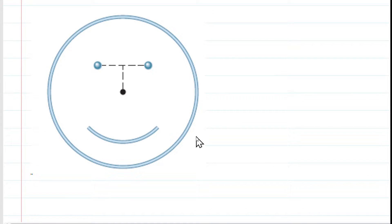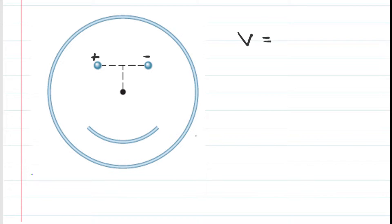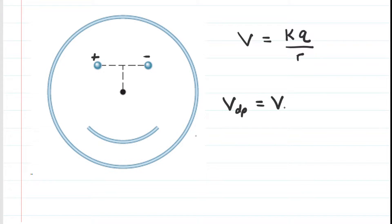Let's consider the dipole first. A dipole is made of a positive and negative charge of equal magnitude. These would be point charges, and the electric potential produced by a point charge is k multiplied by q divided by the distance from the charge to the point in question. To calculate the electric potential due to this dipole, we take the potential produced by the positive charge and add that to the potential produced by the negative charge.